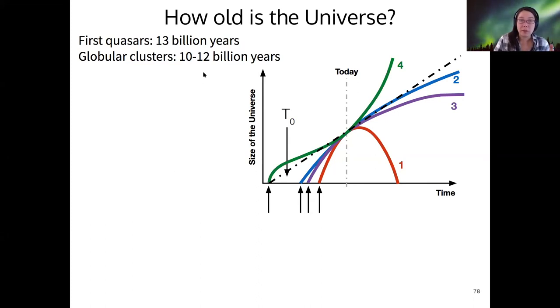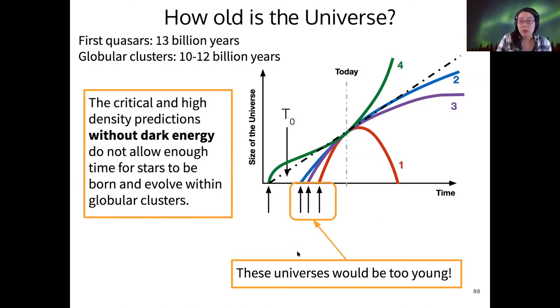Okay. So we know the globular clusters are 10 to 12 billion years old. So no universe can be younger than that. It wouldn't be consistent. Right. And what we do know is that with the universe model in curve two, the universe of curve two would be between nine and 14 billion years old. So it might be old enough, but it might not be curve three is younger. It's closer to the present day than curve two. And so is curve one, which means that all of these universes would be too young. They would be inconsistent with globular clusters. The universe would be younger than the globular clusters. That would be no good. Right. So all of these predictions without dark energy don't allow enough time for globular clusters to form. So none of those could be our universe.